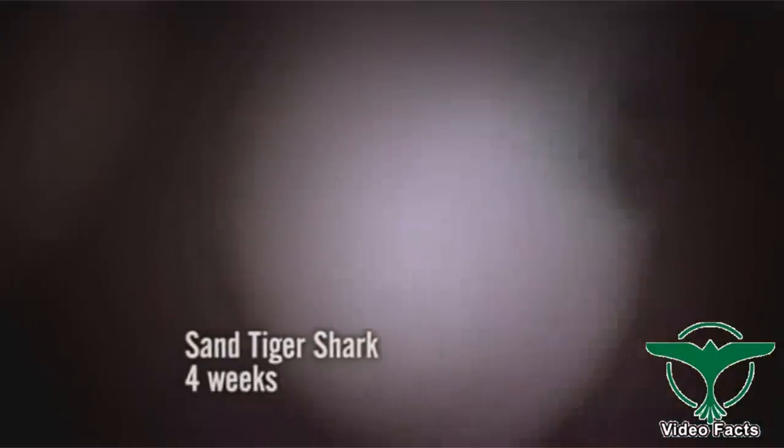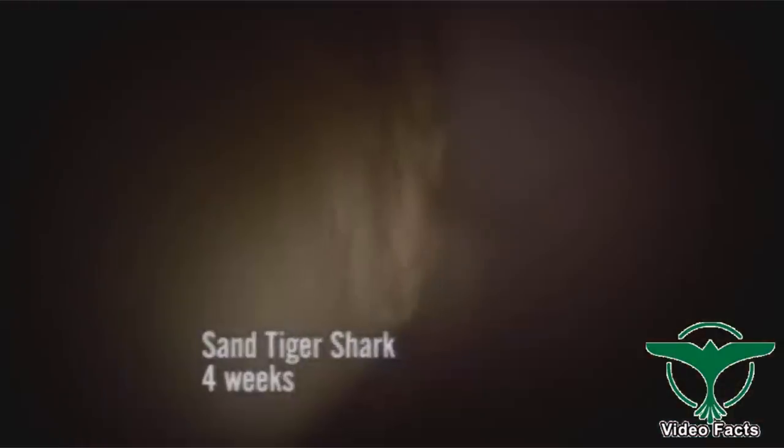When its own yolk sac runs dry, a sand tiger embryo, no longer than a human finger, will rely on hunting instinct and a set of tiny primitive teeth. These are no milk teeth. They are for killing.